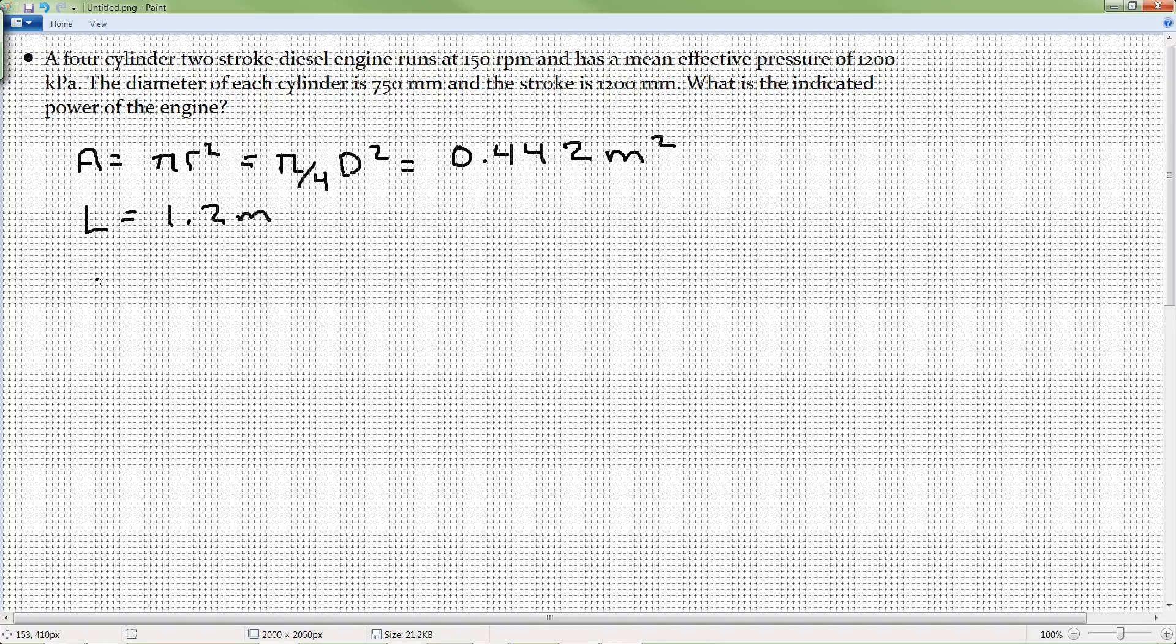My length is going to be 1,200 millimeters, or 1.2 meters. My mean effective pressure Pi is going to be equal to 1,200 kPa.